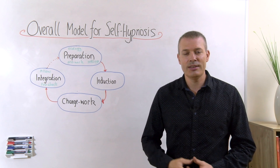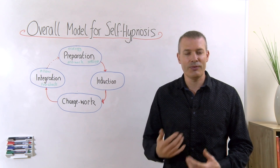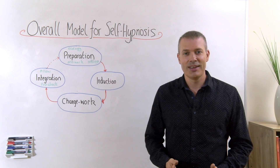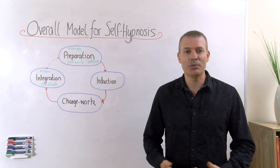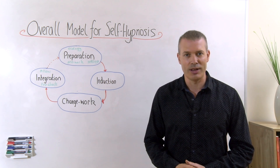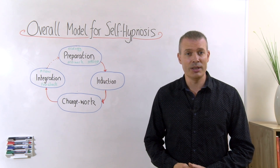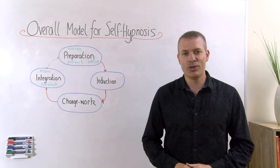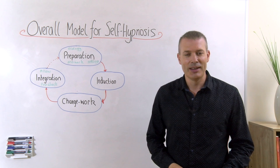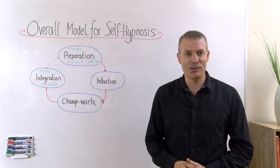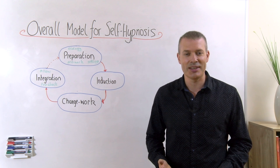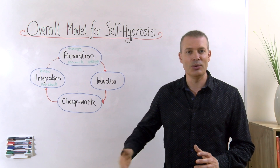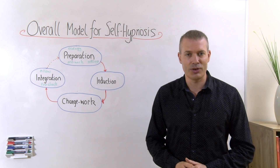A really nice segue is to go through a few different settling processes, just to bring your attention down to the moment so that you can naturally and comfortably go deeply into a wonderful altered state of trance. I'm going to show you a few different ways you can use — you don't have to use all of them, just pick your favourites. You'll also find that settling processes are quite hypnotic themselves, so they may actually take you into trance on their own.